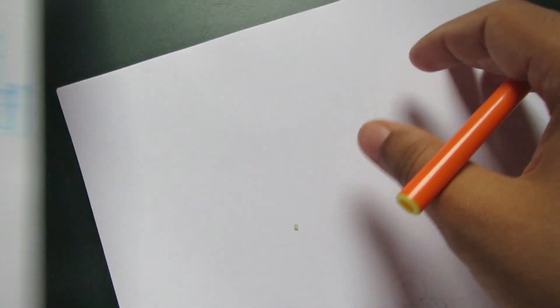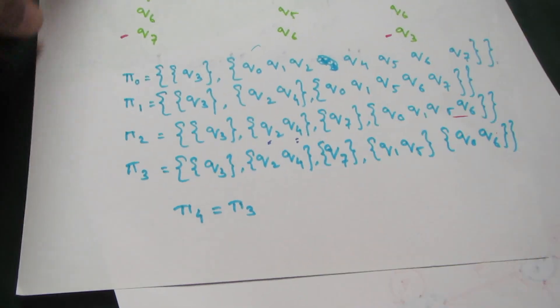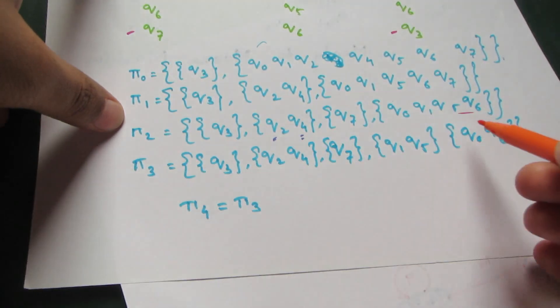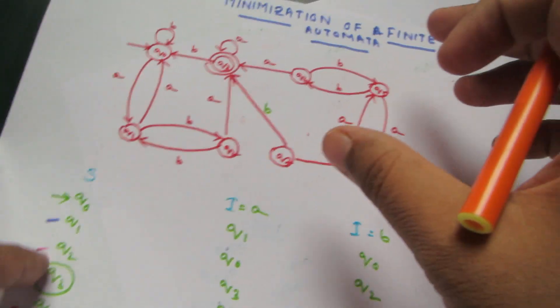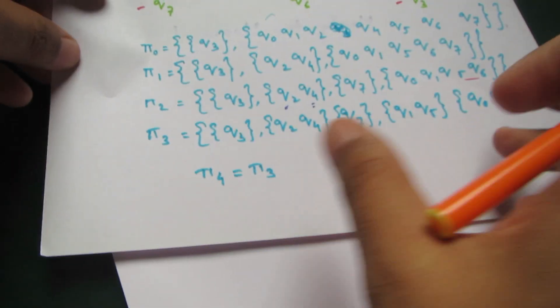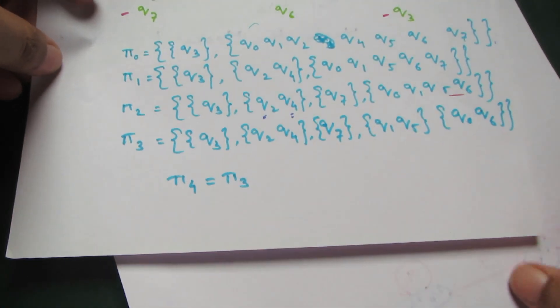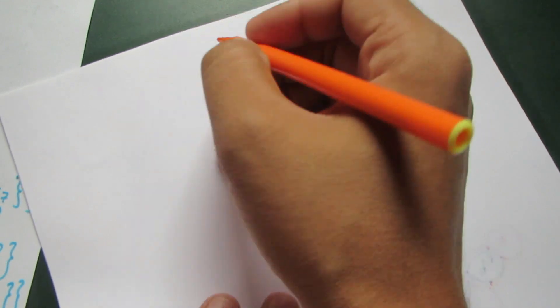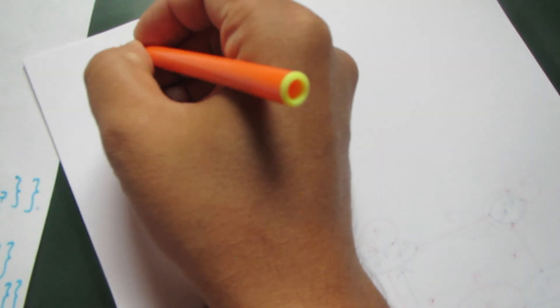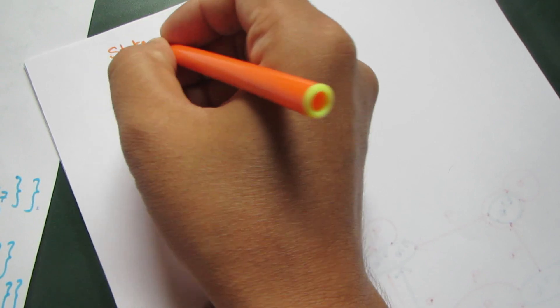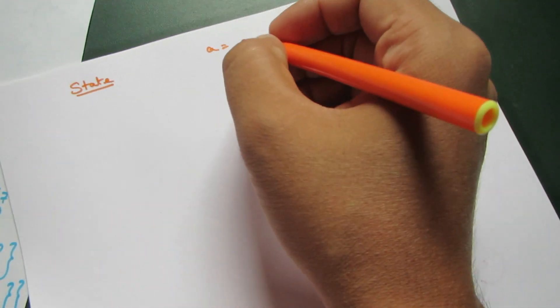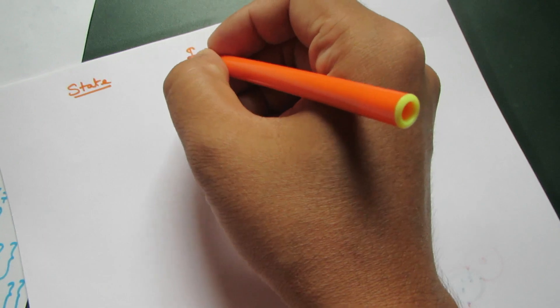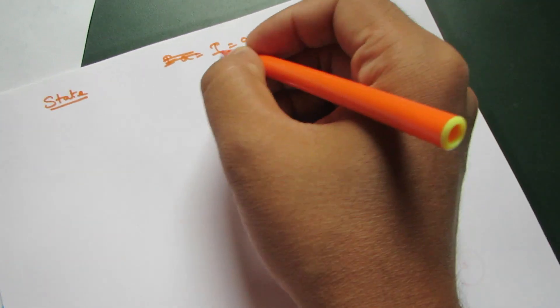The first part was developing the equivalent set from this diagram. Now we will use this equivalent set to get our minimized finite automaton. We will start by writing the state table with columns for state, i equals a, and input is b.